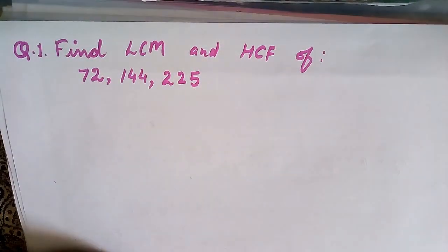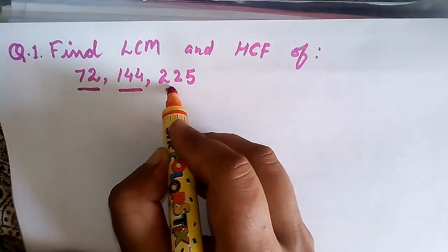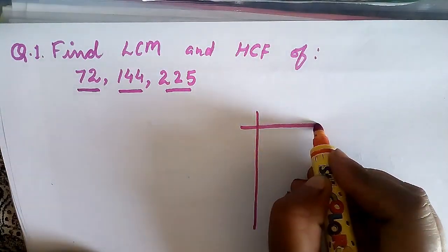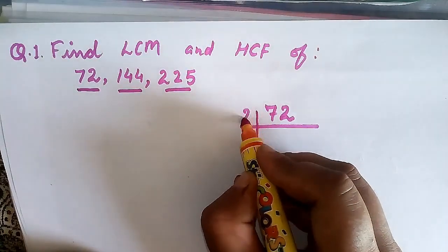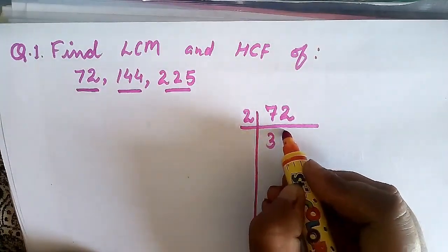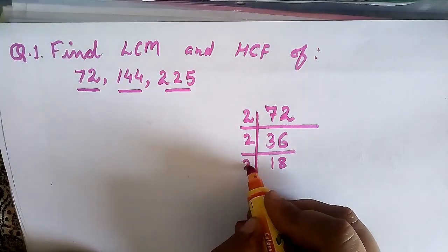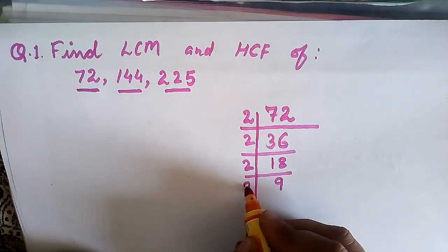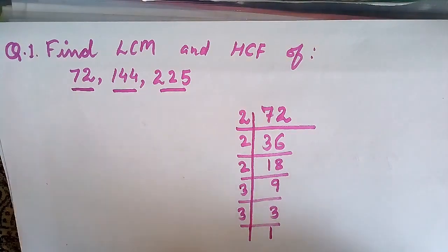Let us see question number one: find LCM and HCF of 72, 144, and 225. First of all we have to do prime factorization of 72, 144, and 225. So let us do prime factorization of 72: divide by 2 to get 36, by 2 to get 18, by 2 to get 9, then 9 divided by 3 gives 3, and 3 divided by 3 gives 1.